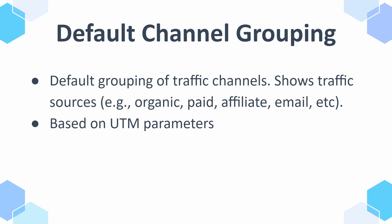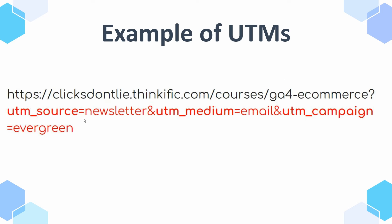These channel groupings are based on UTM parameters — some parameters in the URL. For example, here I have my GA4 for eCommerce course URL, and in it we have UTM source, UTM medium, and UTM campaign. If you want to learn how to use UTM parameters — because they're really important, especially if you're running any type of campaigns, whether ads or email — just click on the banner in the top right corner and it'll take you to a tutorial.